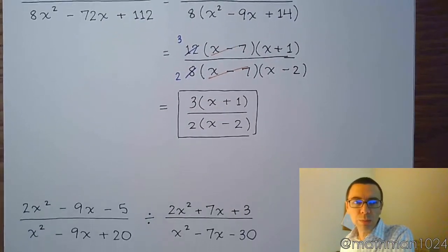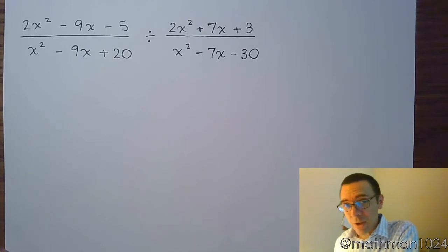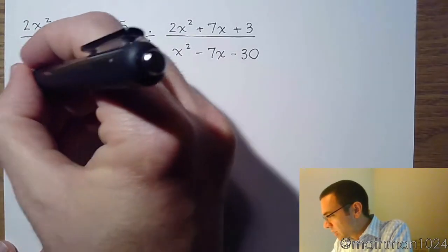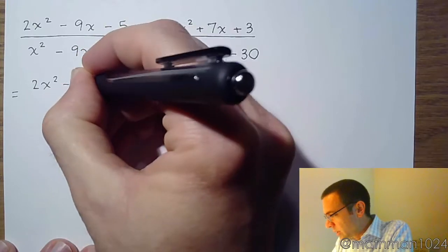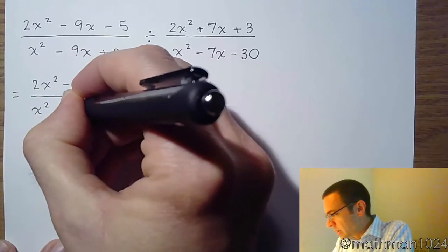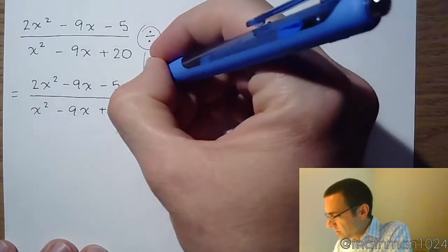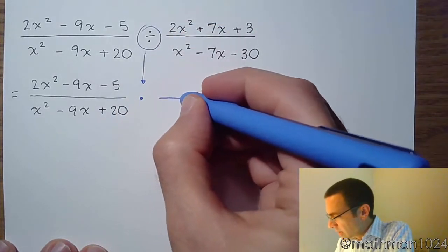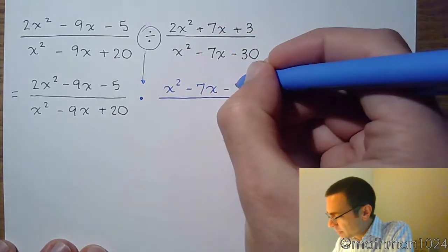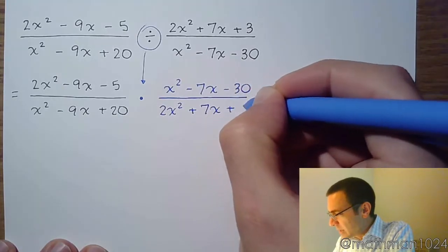Now let's look at the next problem. This one is a division problem, so we have to factor everything, but we also want to make sure we understand that division becomes multiplication — we multiply by the reciprocal. So rewriting the problem: 2x squared minus 9x minus 5 over x squared minus 9x plus 20. We change the division to multiplication, and then take the reciprocal, so the numerator becomes x squared minus 7x minus 30, and the denominator becomes 2x squared plus 7x plus 3.